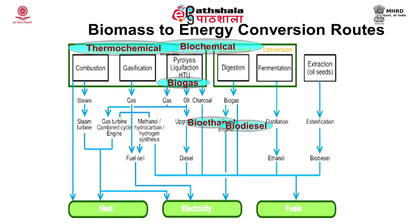In this diagram you can see that thermochemical conversion routes are combustion, gasification, and pyrolysis. In combustion, steam runs a steam turbine and heat is produced. In gasification, the gas produced is used directly for heat or electricity production. In pyrolysis, gaseous or liquid products — bio oil or charcoal — are produced and can be upgraded to biodiesel. In biochemical processes, anaerobic digestion produces biogas, fermentation after distillation recovers ethanol as biofuel, and transesterification of oil seeds produces biodiesel.